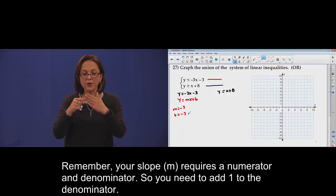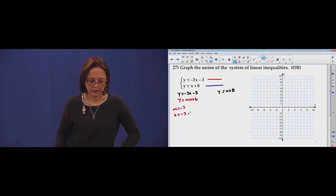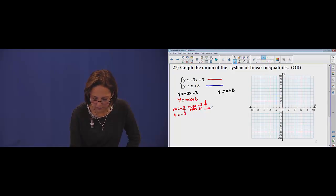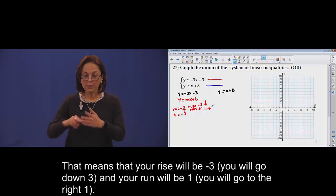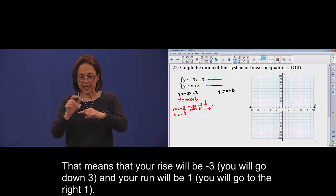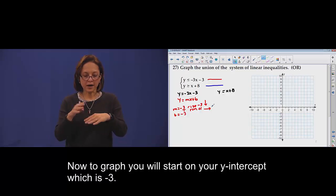Remember m requires numerator and denominator. Add 1. Means what? Write down 3 and write 1. Now graph starting on negative 3, the y-intercept.